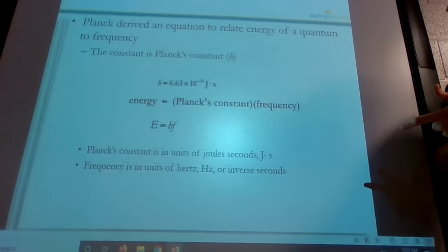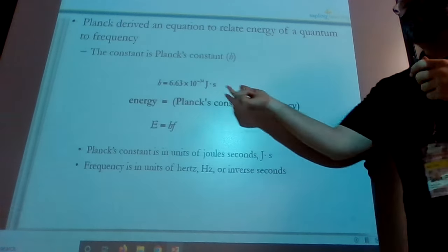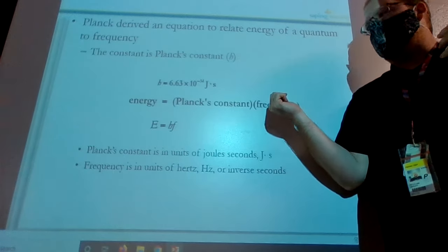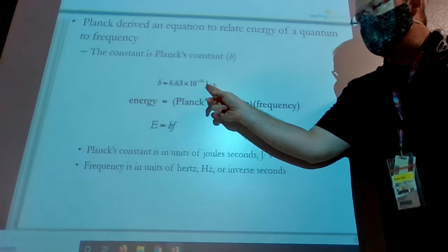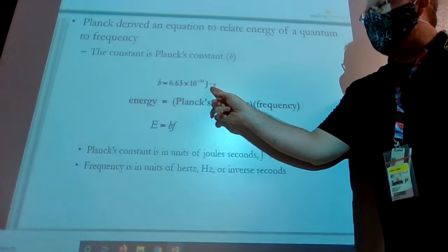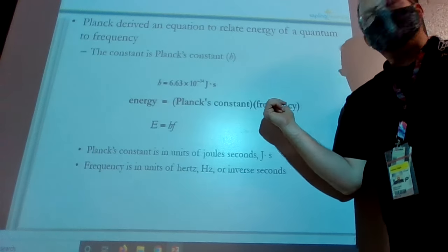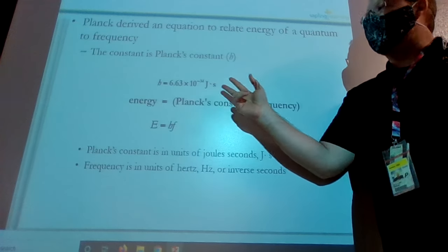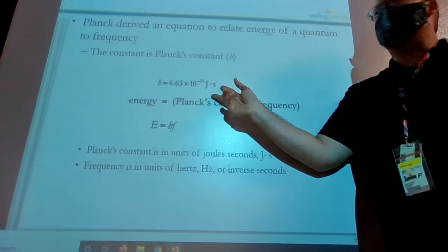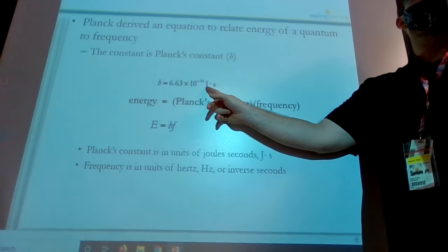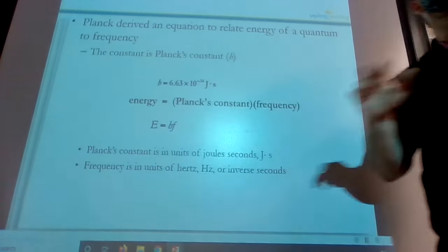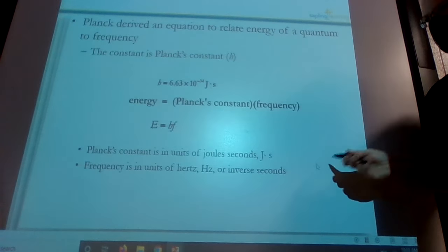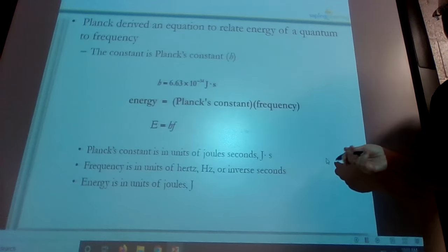Now, Planck's constant is in units of joule seconds. The joule seconds kind of help you work things out when you get into multiplying it by frequency. Because joules is energy. And time seconds, when you get into frequency, it's per seconds. So you're dividing by seconds for frequency. So when you have seconds on top and seconds on bottom, the seconds will cancel out. And the only unit you'll have left is joules, which is energy. So this is kind of satisfying all your different units and making sure you get your units correct. So yeah, energy is in units of joules.